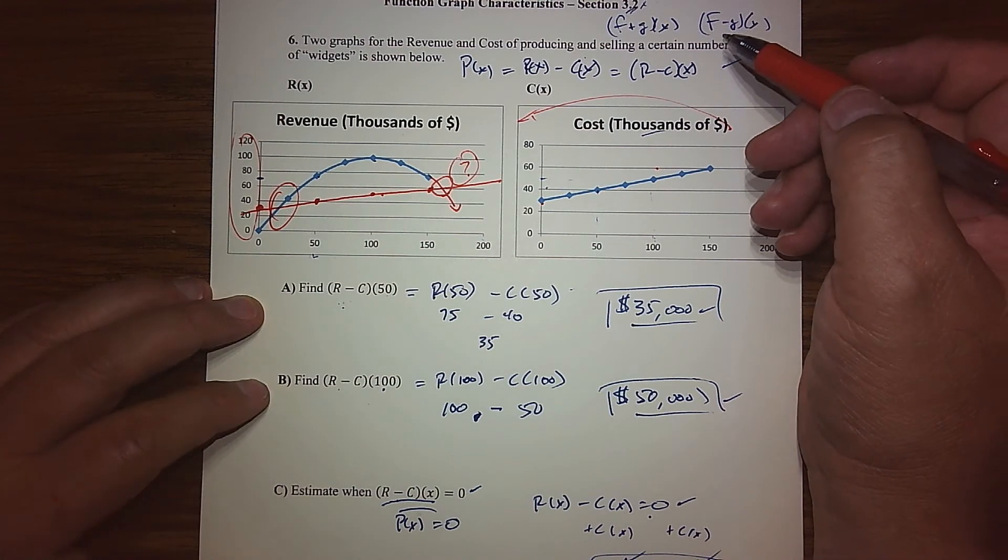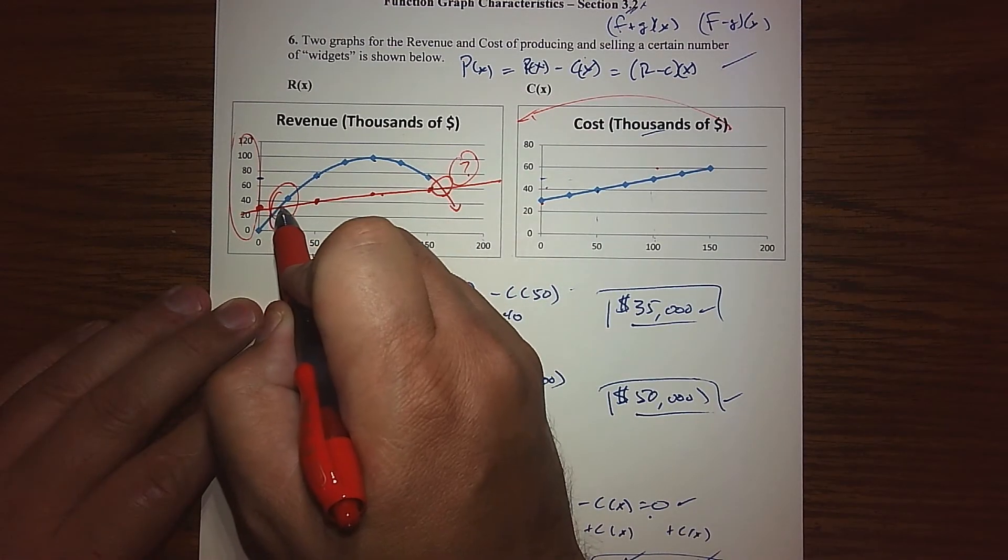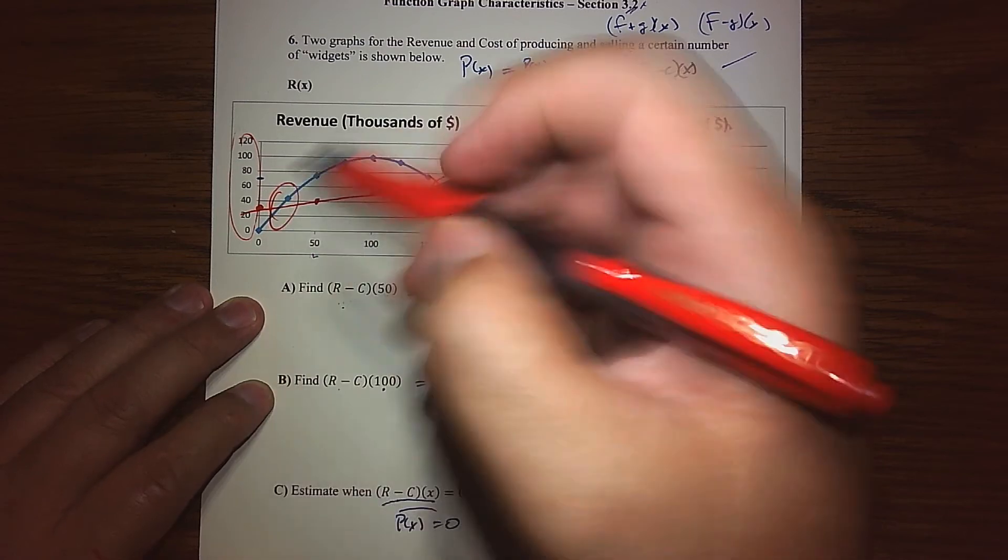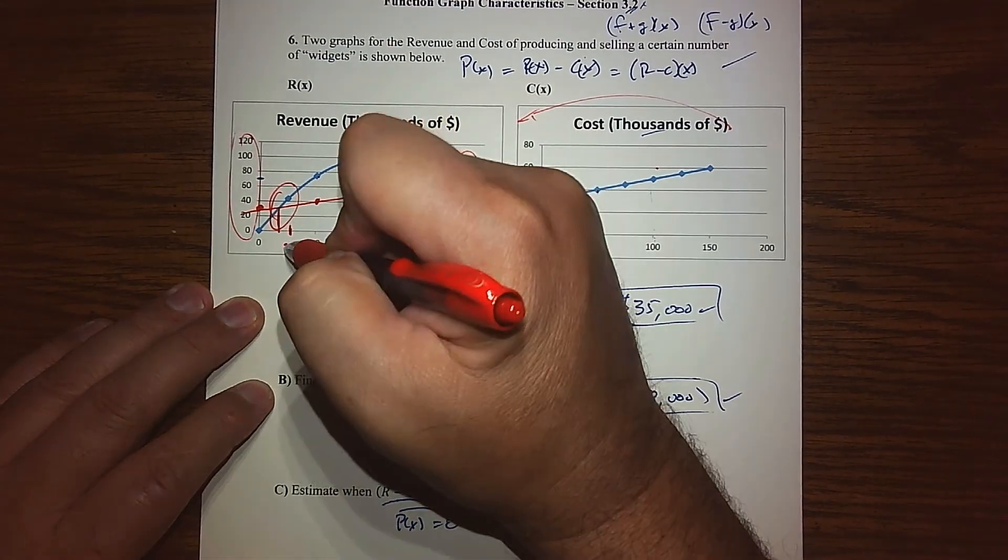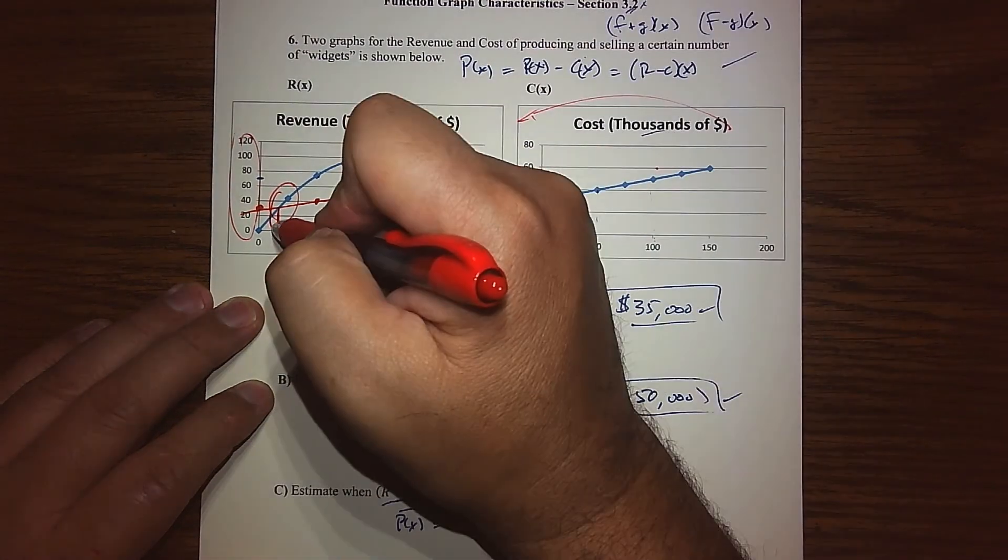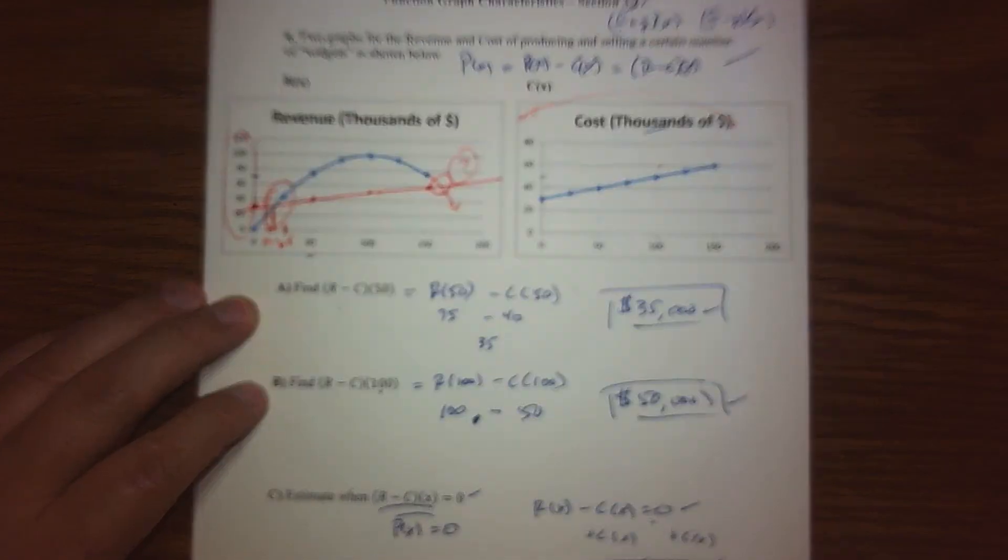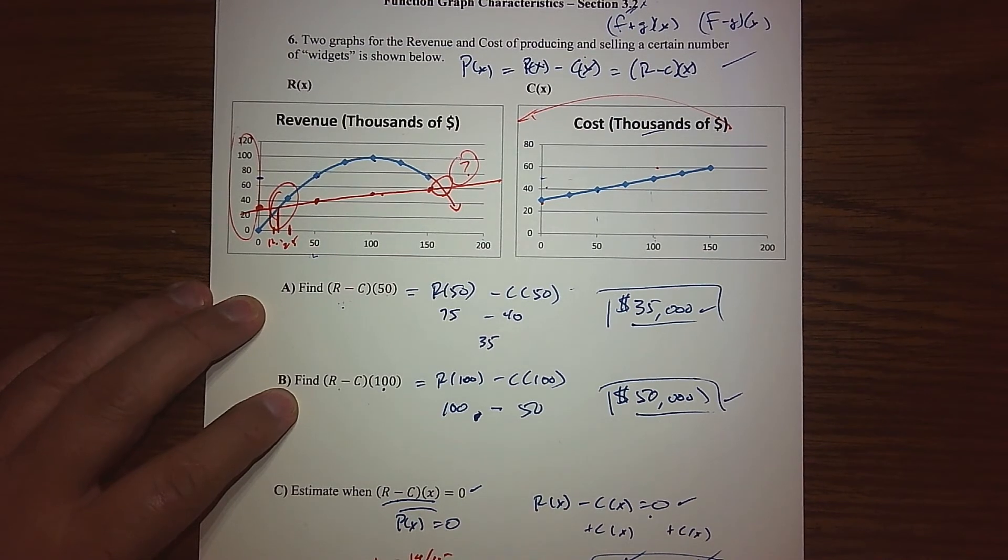It looks like one of the values is just right around here. Half of this is 25, half of that is about 12.5, so it looks like one of our values is probably like 14 to 15. About 14 to 15 widgets is an area where my revenue matches the cost.